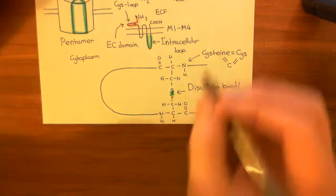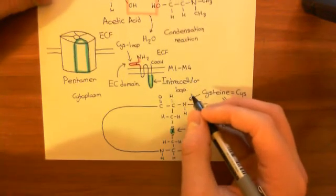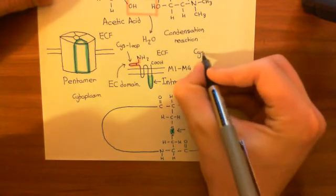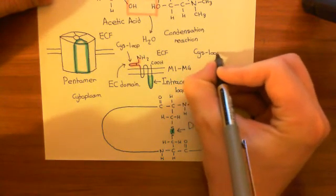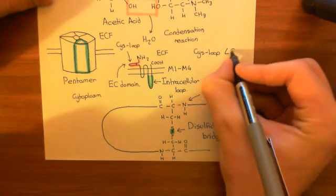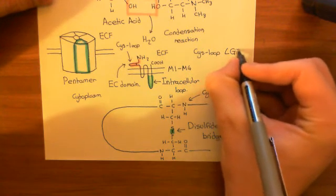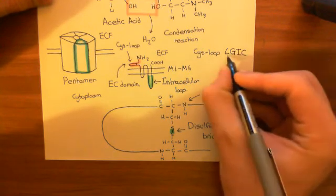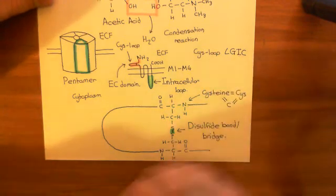That's why nicotinic acetylcholine receptors are known as cys-loop ligand-gated ion channels. Ligand-gated ion channel is often abbreviated to LGIC for short.